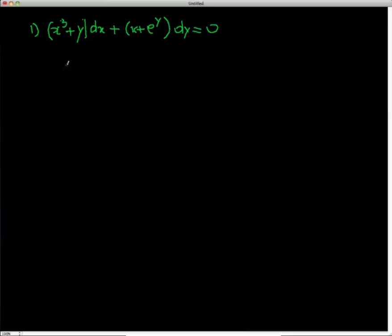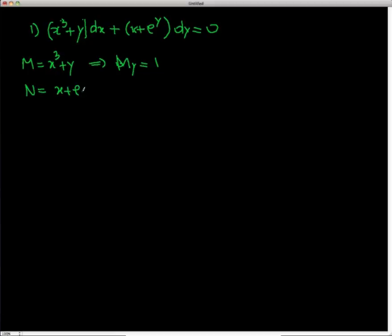If I look at separable, it's most probably not separable because we have a sum in each term. If I try linear, dividing by dx gives dy/dx but the coefficient depends on y, so it's not linear. I'll try exact: M = x³ + y, so M_y = 1, and N = x + eʸ, so N_x = 1. Since M_y = N_x, this is an exact equation.